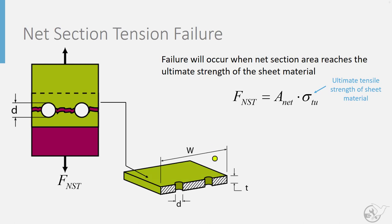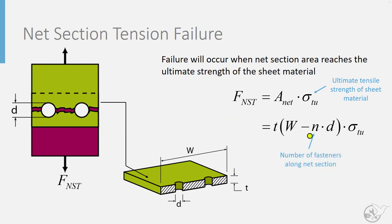Looking at the net section cross section, we have the width minus the regions where the bolts are, as the bolts cut out area. So we get: width minus the number of fasteners times the diameter of the fastener, multiplied by the thickness. That defines our net section area, and we multiply that by the ultimate tensile strength of the material to get our net section tension failure force for the plate.